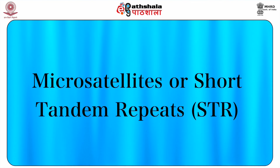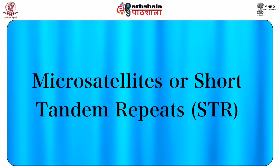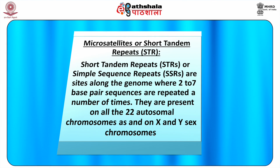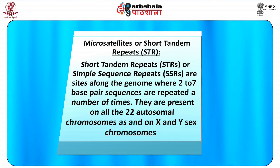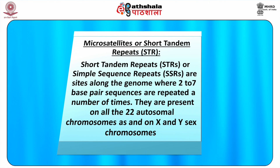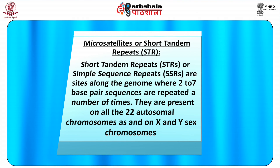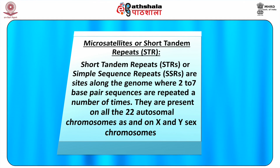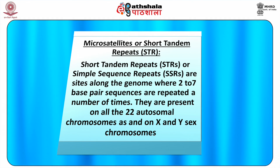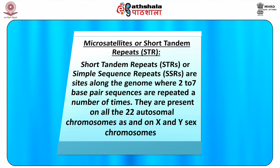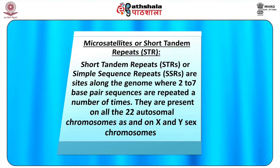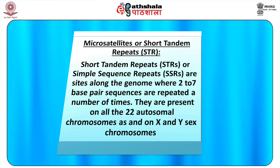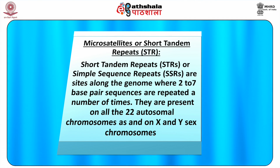Microsatellite or short tandem repeats (STRs): Short tandem repeats or simple sequence repeats are sites along the genome where 2 to 7 base pair sequences are repeated a number of times. They are present on all 22 autosomal chromosomes as well as on X and Y sex chromosomes. STRs on the Y chromosome vary very little because of the absence of recombination. For example, a dinucleotide repeat GTn and the trinucleotide repeat CAGn.